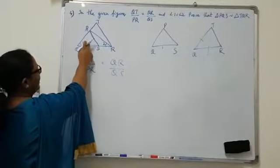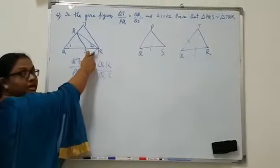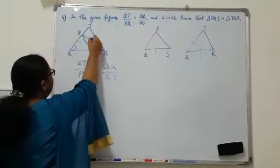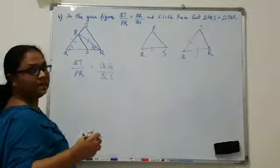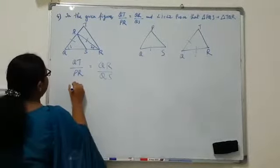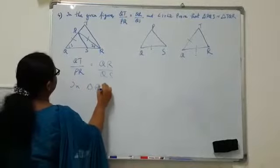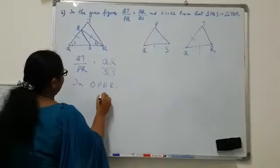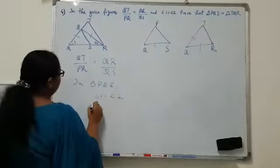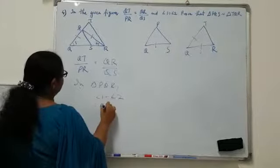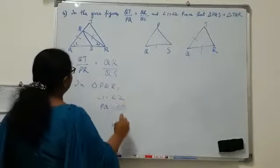In triangle PQR, angle 1 and angle 2 are equal. Therefore, PQ will be equal to PR. So we can write in triangle PQR, angle 1 equal to angle 2. Therefore, we can write PQ equal to PR.